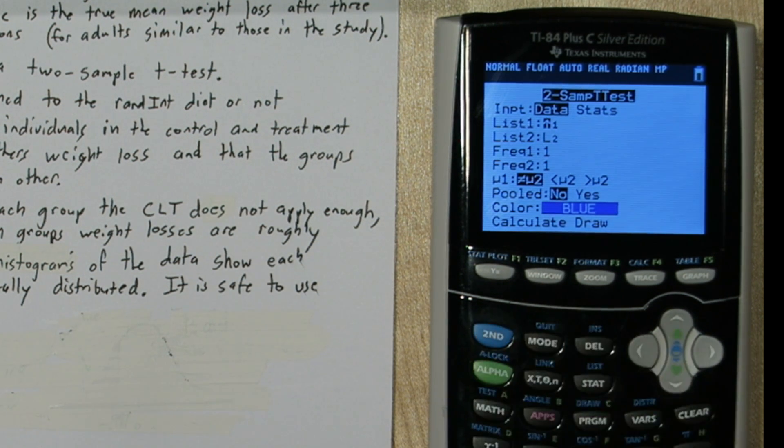We said the treatment group is greater than the control group. So our first list we want to be our treatment group, list 2. And our second list we want to be our control group, list 1. Of course we could have just typed these into the calculator in a different order, and we wouldn't have to change this.